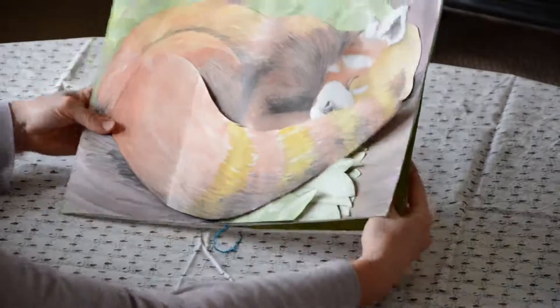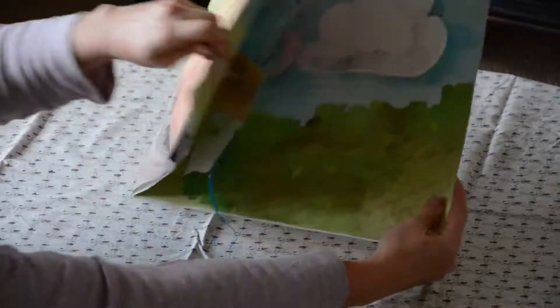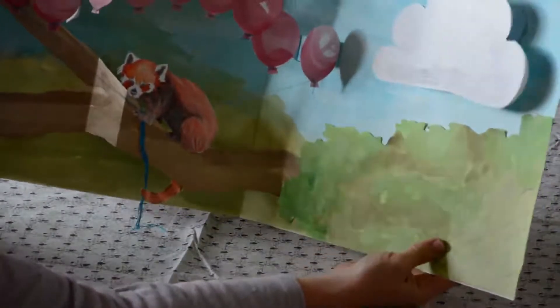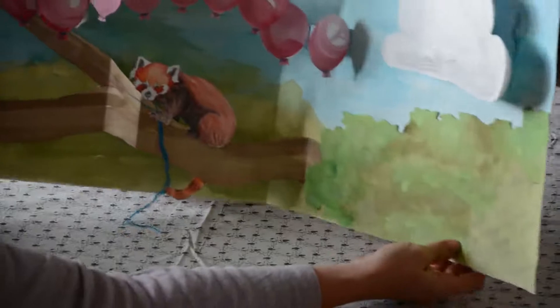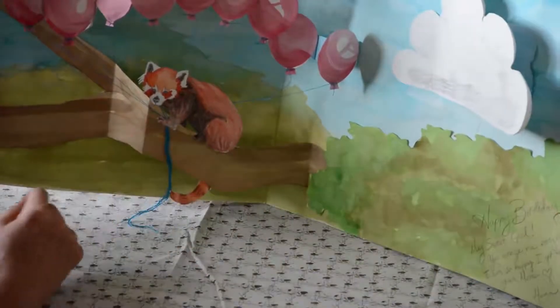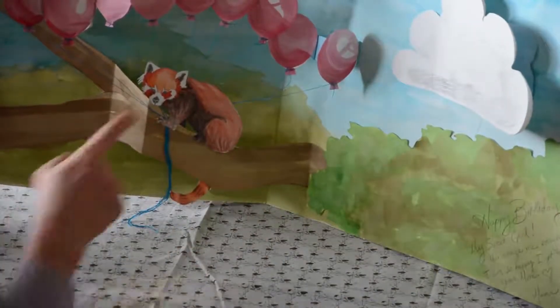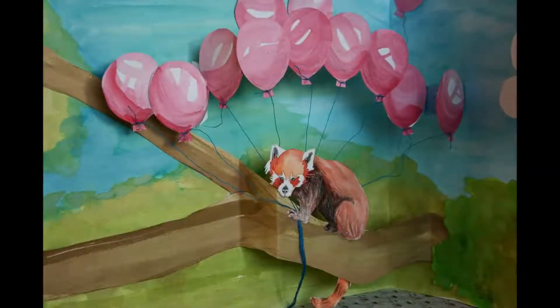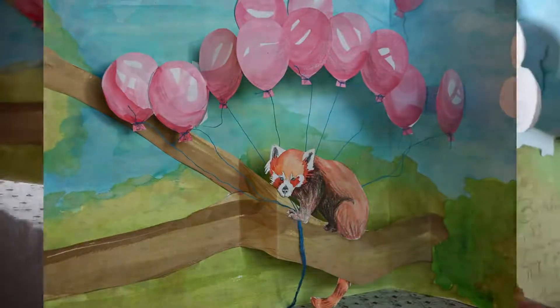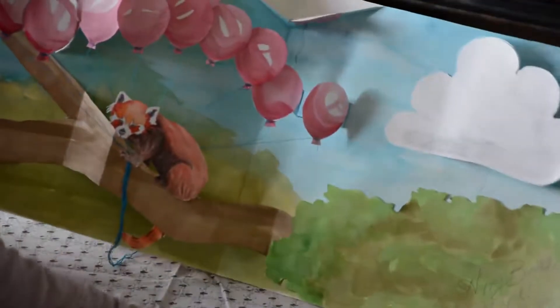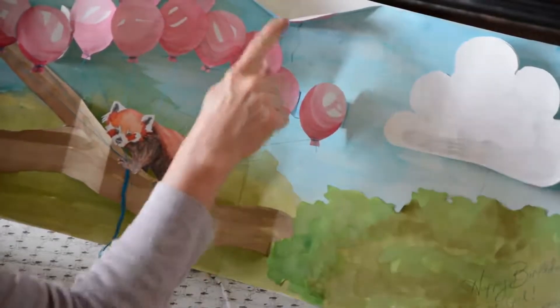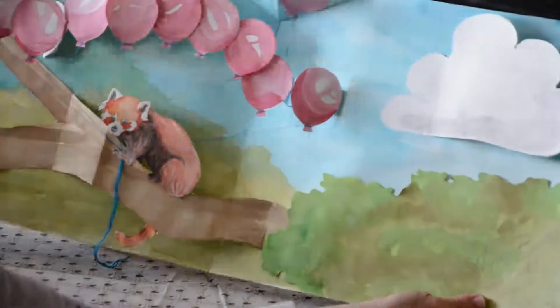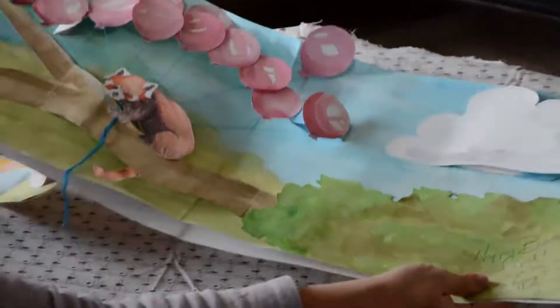So as we open the card, the panda pops up from off center, and the balloons pop up from off center and they're in several different layers. Now you may notice that as the card is only halfway open, the pop up on the top isn't really noticeable until you open the card all the way.